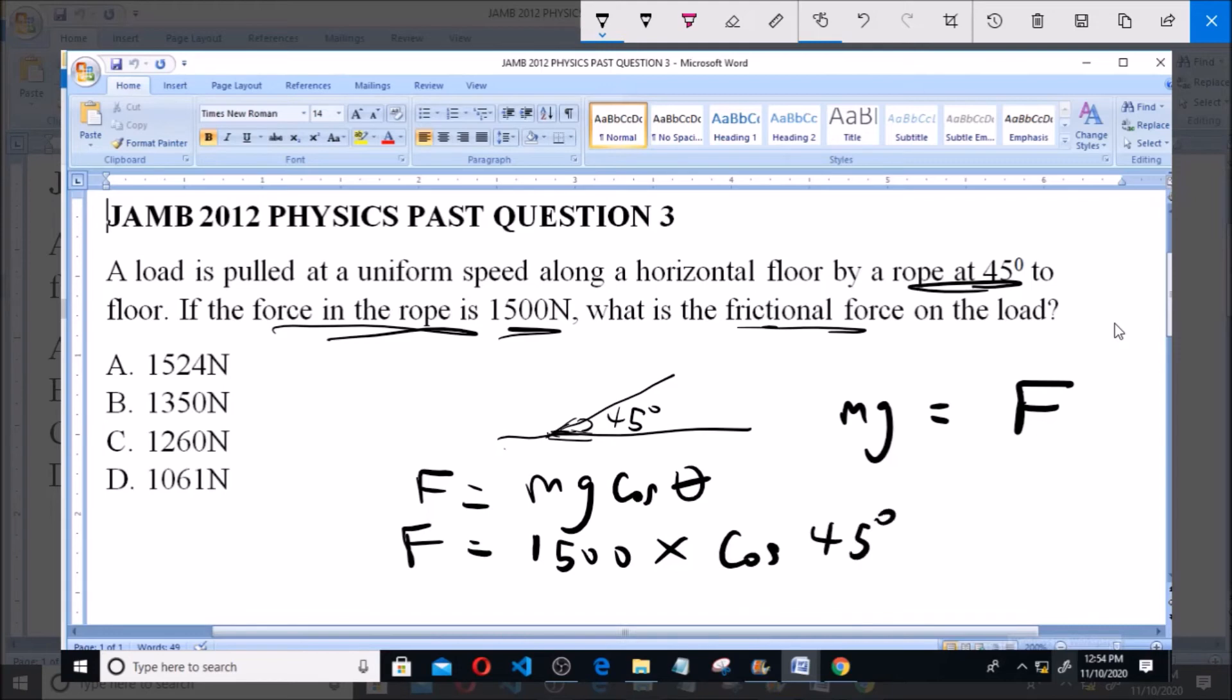which is the angle at which the rope is attached. So, cos 45 degrees. And if you do this, it's equal to 1060.66 Newton, which is approximately 1061 Newton.